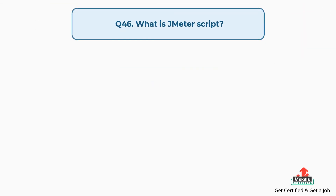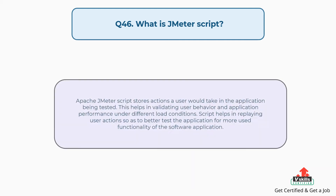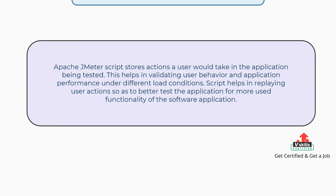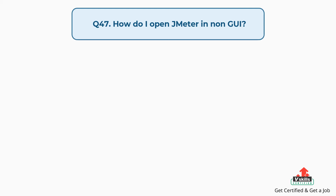Question 46: What is a JMeter script? An Apache JMeter script stores actions a user would take in the application being tested. This helps in validating user behavior and application performance under different load conditions. Scripts help replay user actions to better test the application for frequently used functionality.